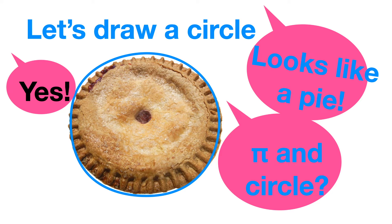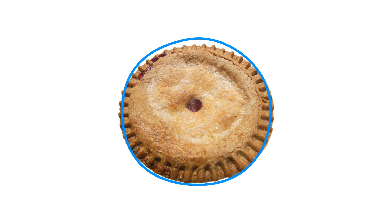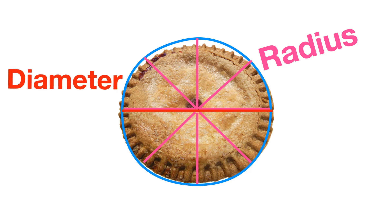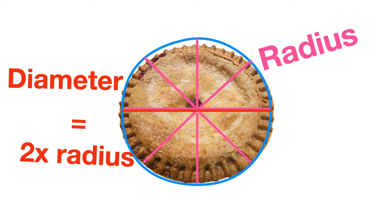Pi is a ratio between circumference and diameter. We'll learn about circumference and diameter in a minute. A circle has the same distance from the center to the edge, called radius. The diameter is the distance across a circle — really just the same as two radius lines. All the way around the circle is called circumference.